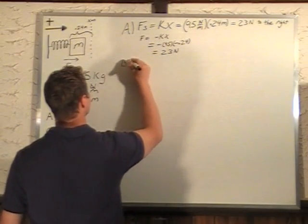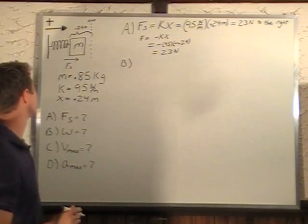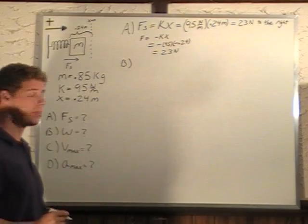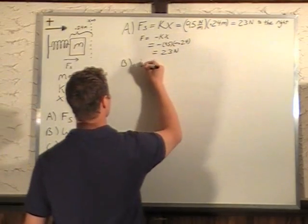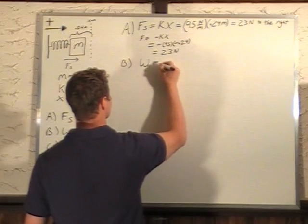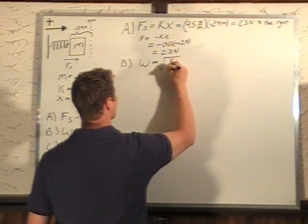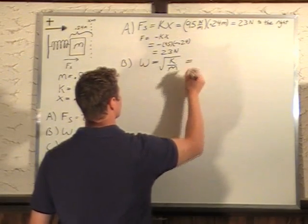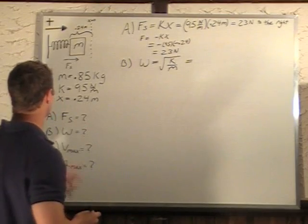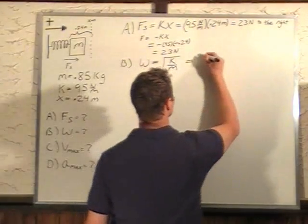Now, B was the angular frequency of this oscillating system. Now we know omega, which is our angular frequency, is equal to root K over M. So we plug in K of 95 newtons per meter.